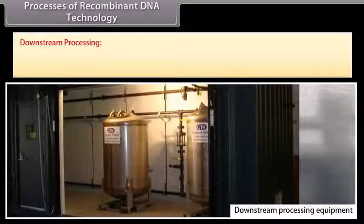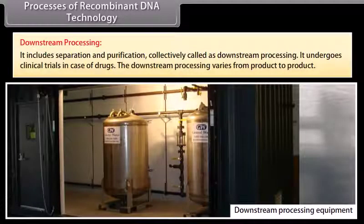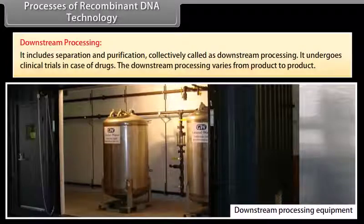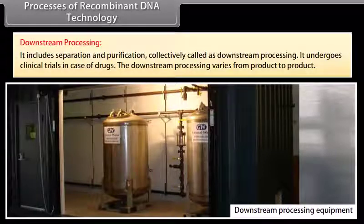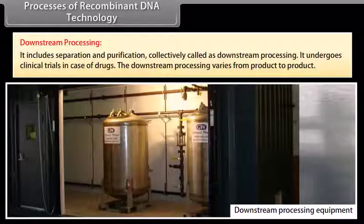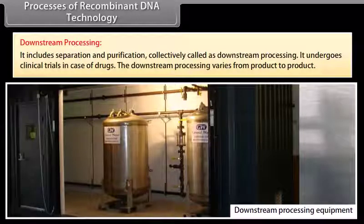Processes of recombinant DNA technology. Downstream processing. It includes separation and purification, collectively called as downstream processing. It undergoes clinical trials in case of drugs. The downstream processing varies from product to product.